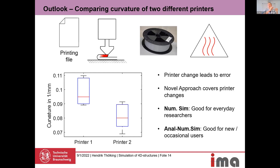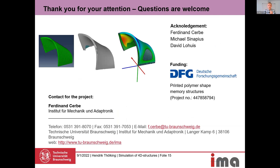The novel approach I presented covers printer-to-printer variation because you always print your simple bending body on your specific printer, so your printer's behavior is already included. In summary, purely numerical simulations are good for experienced everyday researchers who know their printer well and have their own data. But for new or occasional users without their own printer, this analytical-numerical approach can be very useful because all the relevant data is directly captured through the analytical step. Thank you for your attention and I welcome questions.